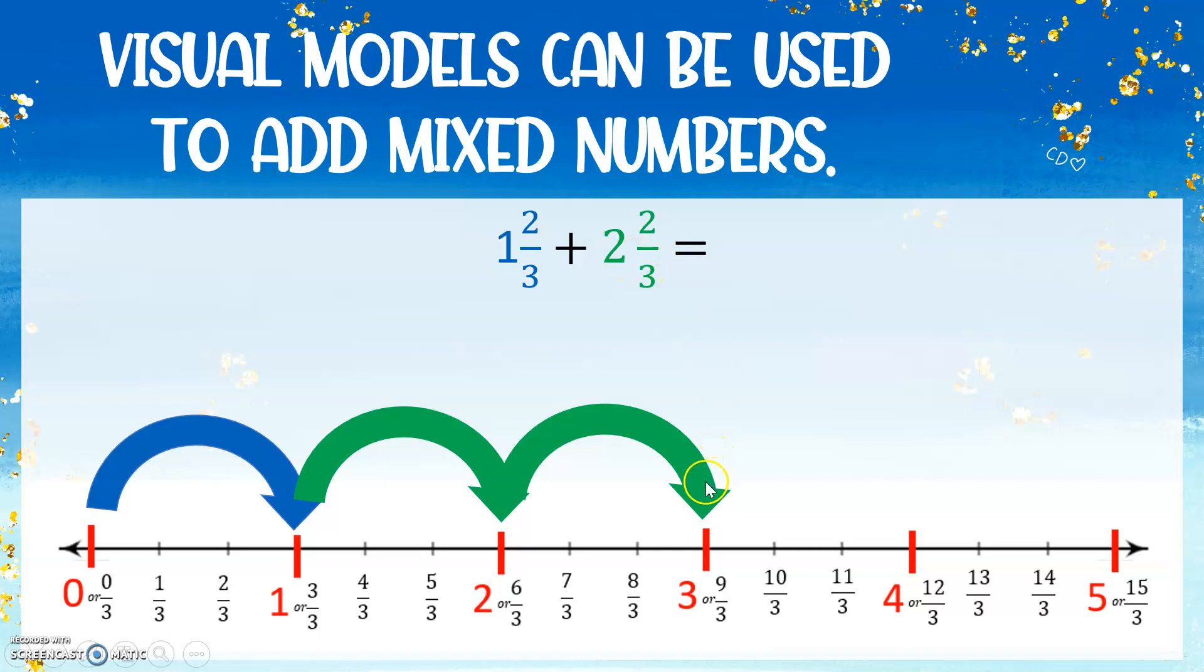Now we need to add our fractions. So I'm going to have 2 thirds that are representing the blue 2 thirds plus 2 thirds that are representing the green 2 thirds. It still gets you to 13 thirds. And you could also say it the same way. You could say 4 and 1 third.